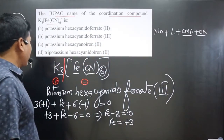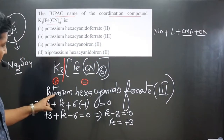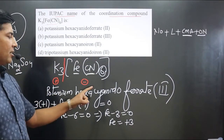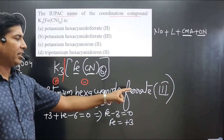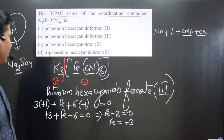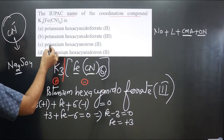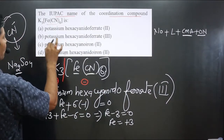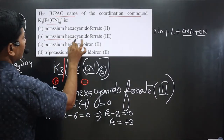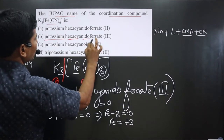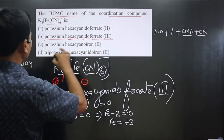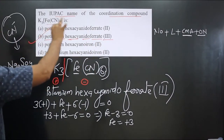The name of the complex is potassium hexacyanidoferrate(III). Looking at the options, option B — potassium hexacyanidoferrate(III) — is correct.